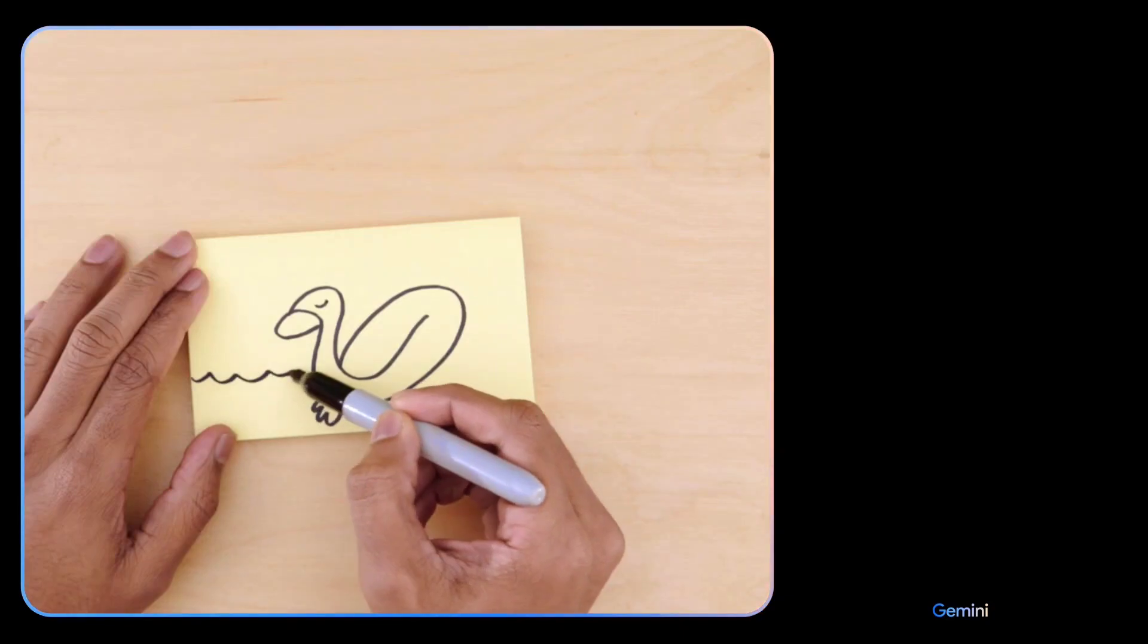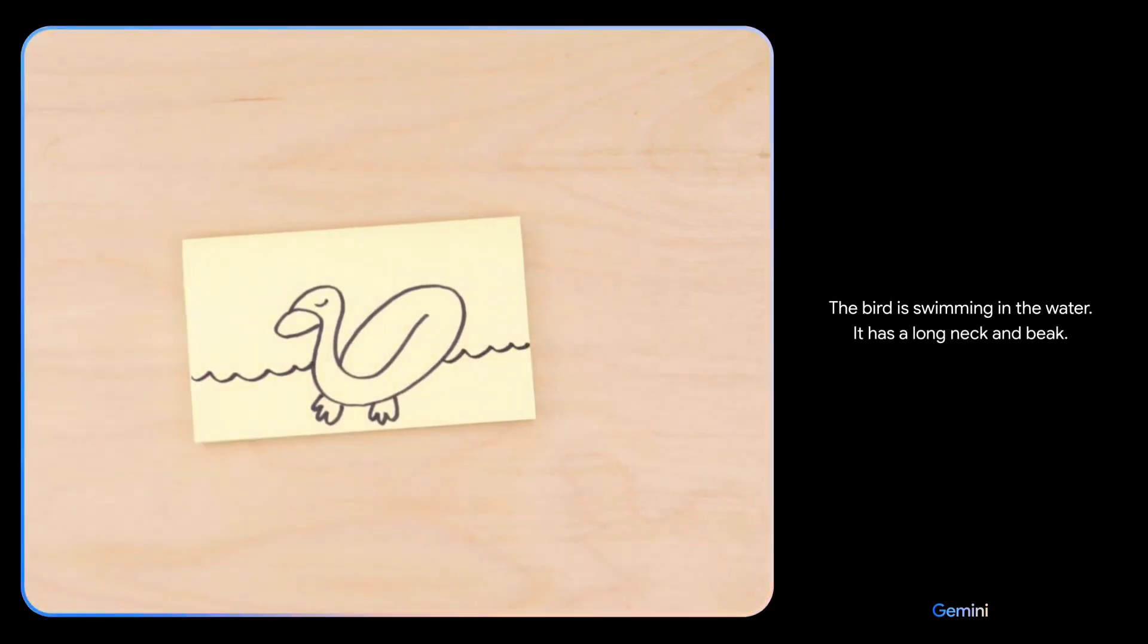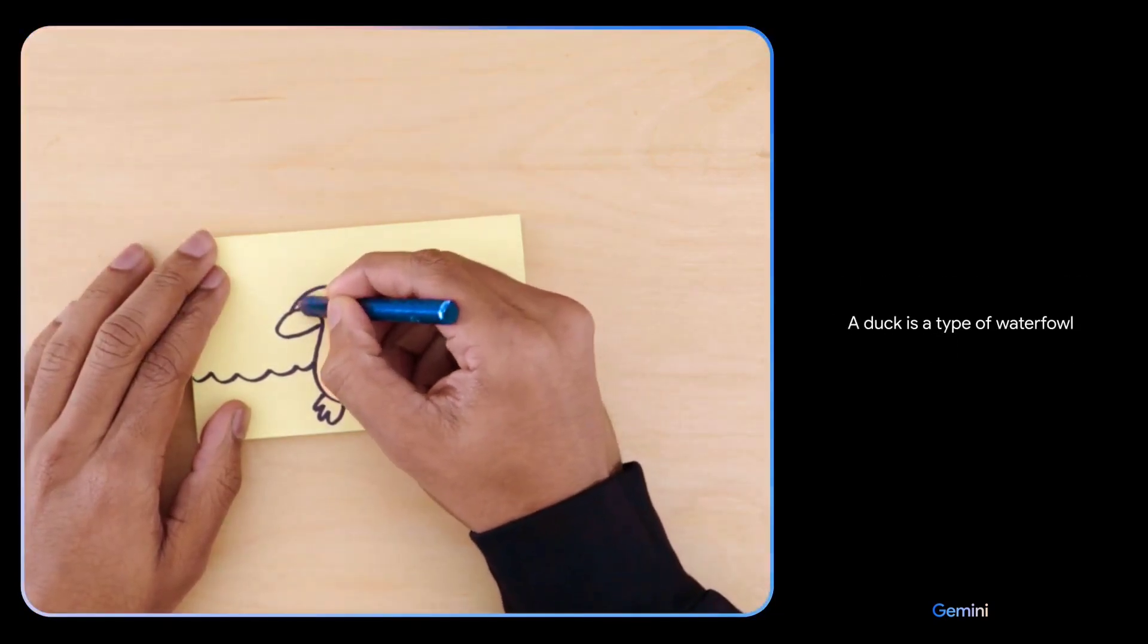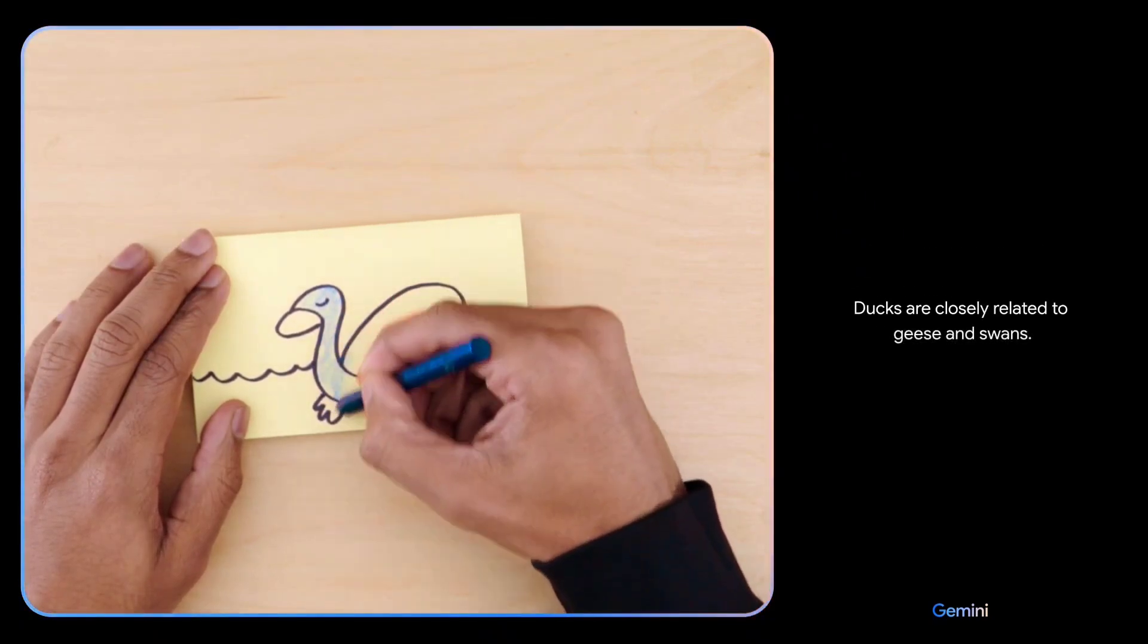What if I add this? The bird is swimming in the water. It has a long neck and beak. It is a duck. Yes, a duck is a type of waterfowl in the family Anatidae. Ducks are closely related to geese and swans.